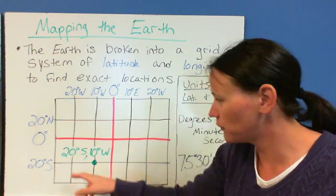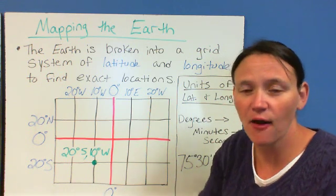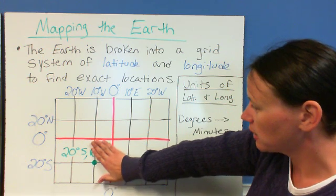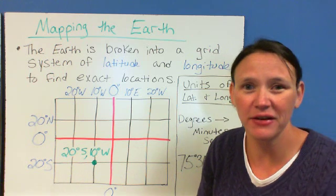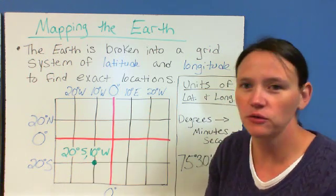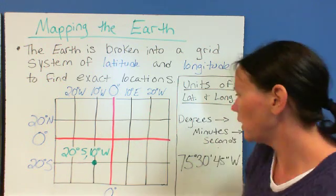So, that would be the coordinate you would give: 20 degrees south, 10 degrees west. And that helps pinpoint. If you just said 20 degrees south, that's anywhere around the world at 20 degrees south. That doesn't really narrow things down much. So, if you give your longitude, now you know, are you in the western or the eastern hemisphere.